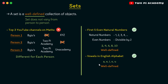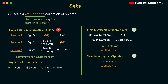Now let's see another example of something that is not a set: top 3 cricketers in India. When naming the top cricketers in India, you will have names such as Virat Kohli, MS Dhoni, Sachin Tendulkar and some other names. But out of these, everyone can pick 3 different names. Therefore, it is not well-defined and hence it is not a set.